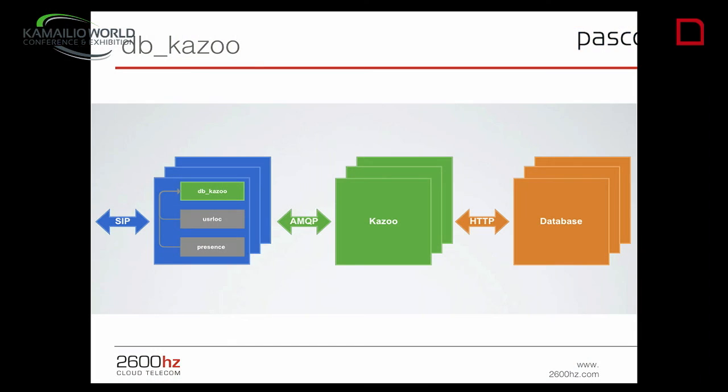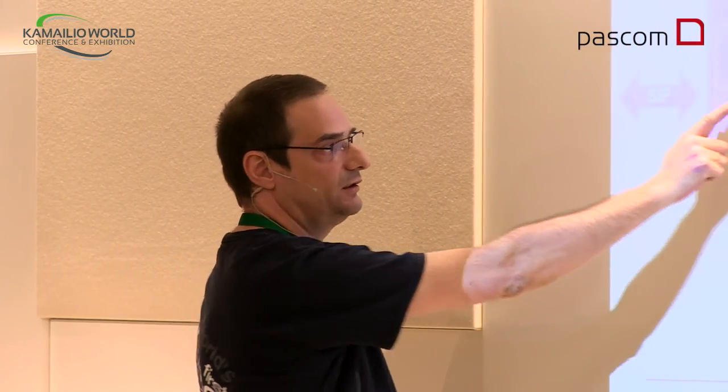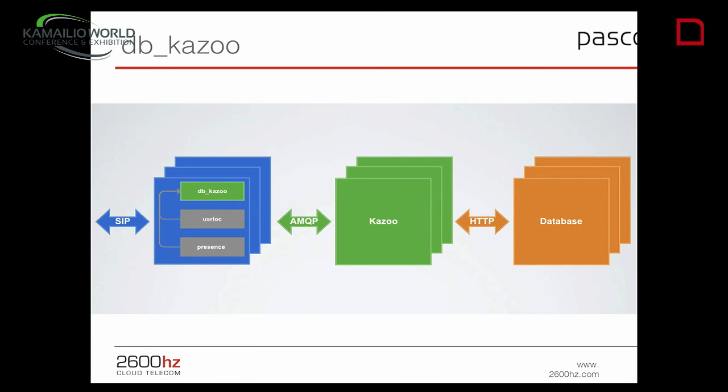That's enough for the selling part. Now let's talk about the Kazoo module. Last year, my colleague Karl told you that we had the DB Kazoo module that acted like a database connector. A user tries to register and we bind it to the user location and save. When the save is made, we were actually sending an AMQP message and waiting for an answer, then doing the actual save or not.